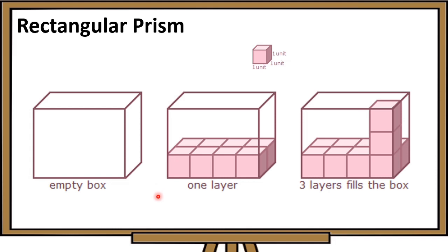We have here an empty box — a rectangular prism — and a cube with a measurement of length 1 unit, width 1 unit, height 1 unit. Maglalagay tayo ng cubes dito sa ating rectangular prism hanggang sa mapuno ito.